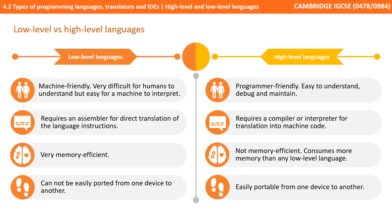Low-level languages require an assembler for direct translation of language instructions, whereas high-level languages require a compiler or interpreter for translation into machine code. Low-level languages are incredibly memory efficient, while high-level languages are less memory efficient — in other words, they consume more memory.